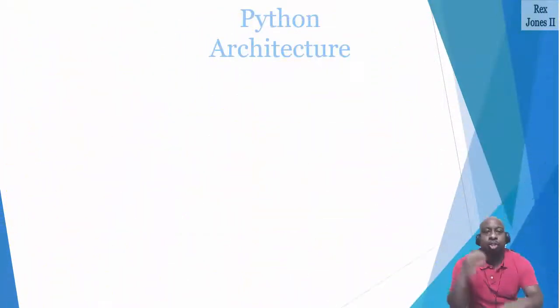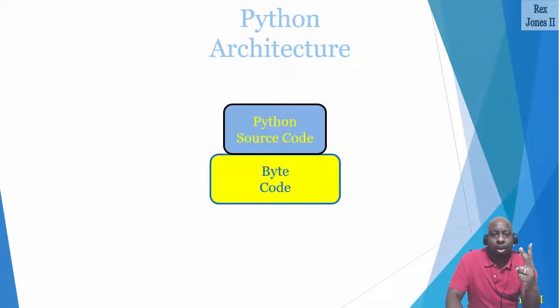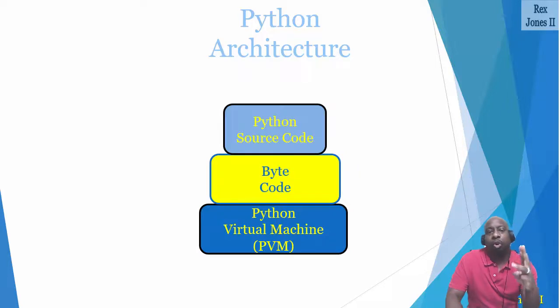The architecture for Python includes three main parts: the source code, bytecode, and Python virtual machine, also known as PVM.